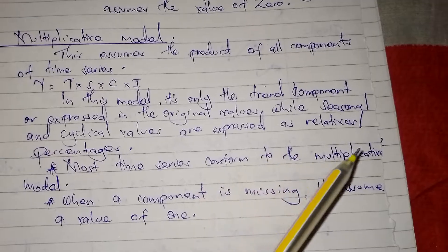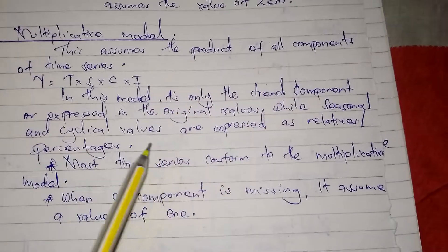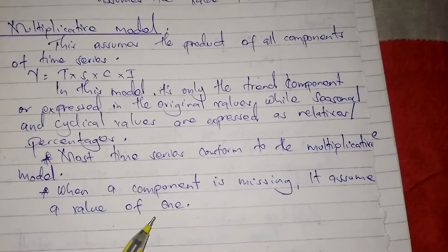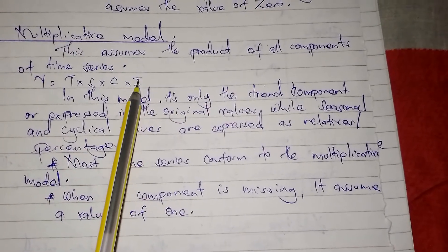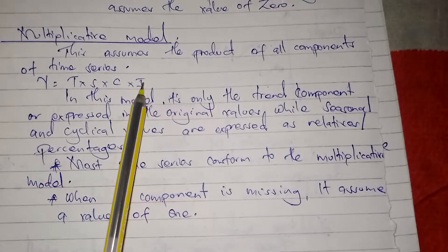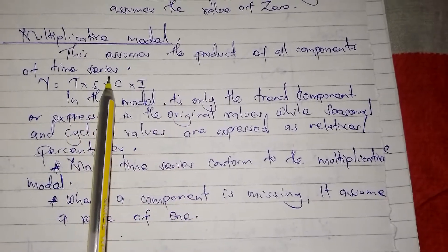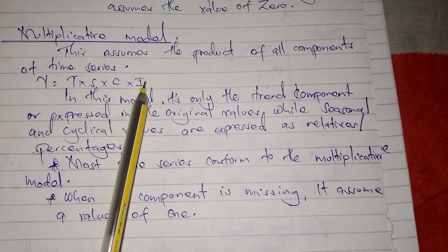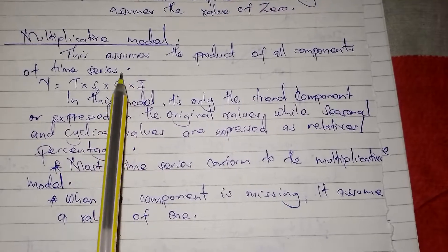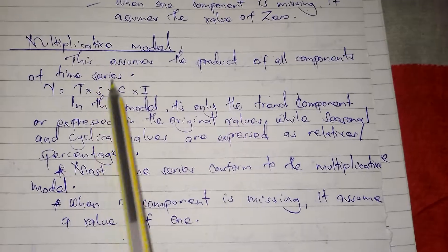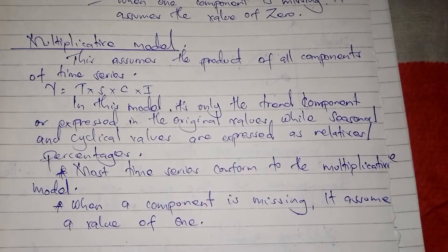Most time series conform to the multiplicative model, so it is the more common one. When one component is missing it assumes the value of one, because if we put zero, since it is multiplication we would get the answer as zero. So in the multiplicative model, if T, C, I, or S is missing, it becomes one.